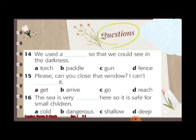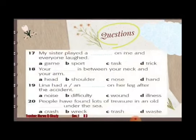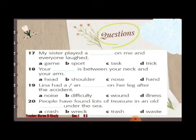Seventeen: My sister laid a ___ on me and everyone left. A: game, B: sport, C: task, D: trick. Eighteen: Your ___ is between your neck and your arm. A: head, B: shoulder, C: nose, D: hand.